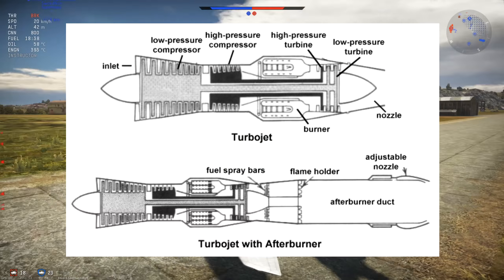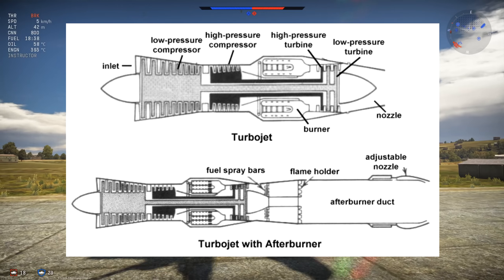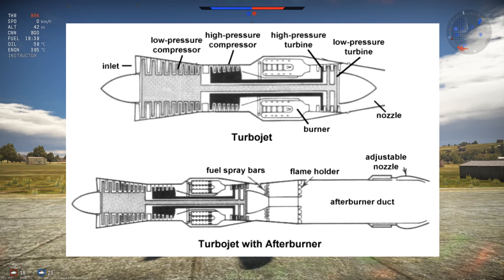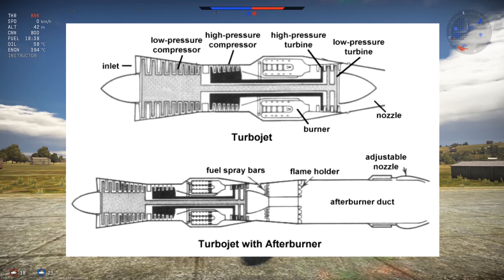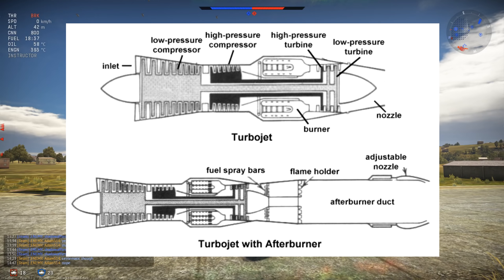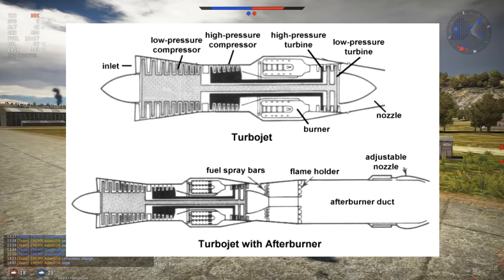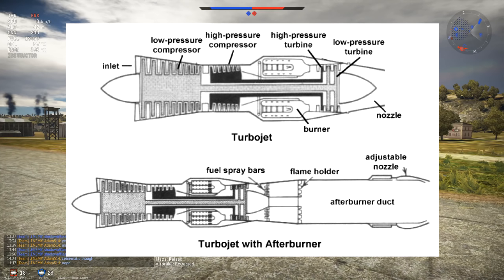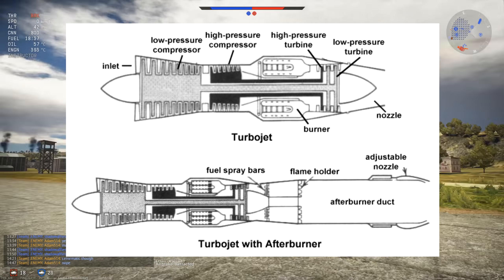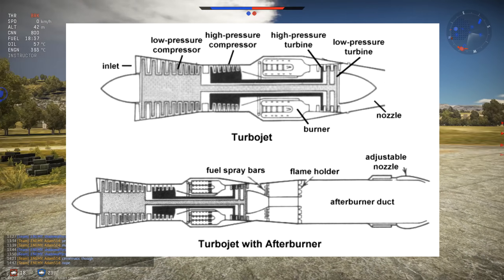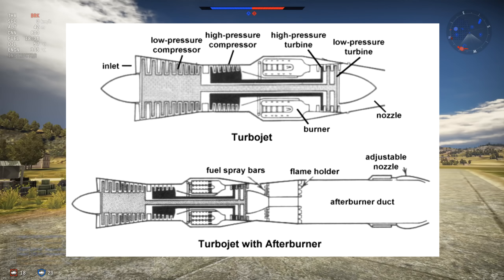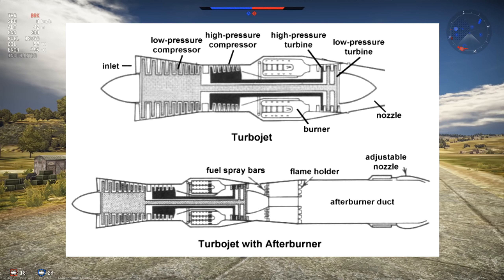That's where the afterburner comes in. The afterburner is simply a pretty long pipe with fuel injectors and mixers, where extra fuel is injected to burn the remaining oxygen, increasing the temperature to generate even more thrust at the nozzle. As such, the afterburner can be used at any throttle setting, which War Thunder doesn't let you do — though this is a minor issue.